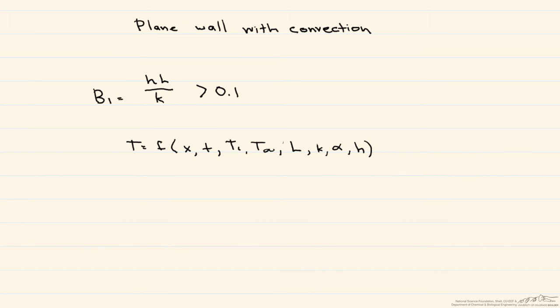So the method used in this screencast is obtained by non-dimensionalizing the governing equations. Let's see how to do that. First we define a non-dimensional temperature that we call theta star. This is equal to our temperature minus our bulk temperature divided by the initial temperature minus the bulk temperature.